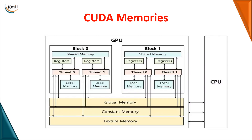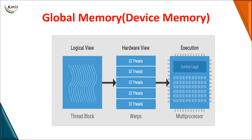That covers the NVIDIA Visual Profiler, which helps you understand the performance of a given application executed on a GPU. Now we'll see the different memories available, also called GPU memories or CUDA memories. Between the CPU and GPU, the GPU has several memory types: shared memory, registers, local memory, global memory, constant memory, and texture memory.